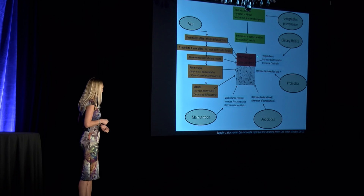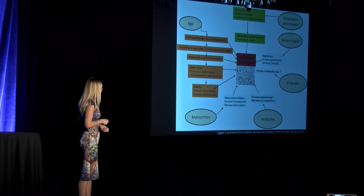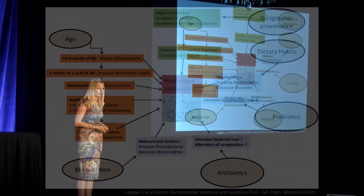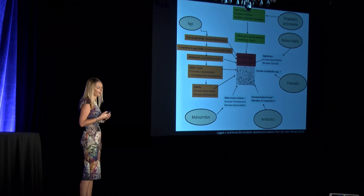There are many things that can influence your human gut composition. Your geographic provenance — which continent you live on — influences what type of gut populations you have. Your dietary habits matter too: vegetarians have increased Bacteroides, the good bacteria, and different gut populations than meat eaters. Probiotics, whether as supplements or in food, increase Lactobacillus — again, that good bacteria.